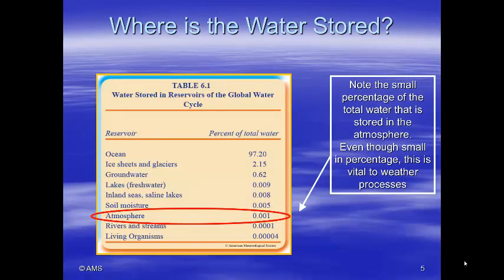The largest two reservoirs are oceans at about 97% and ice sheets and glaciers at about 2%. Then groundwater at about half a percent, then freshwater lakes, inland seas, soil moisture. The atmosphere holds about 0.001% of the water, followed by rivers and streams, then living organisms. Note that this small percentage stored in the atmosphere is vital to the weather.